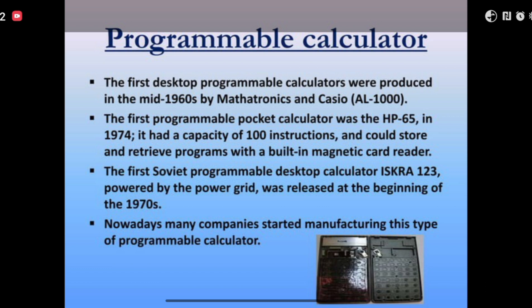The first programmable pocket calculator was the HP-65 in 1974. It had a capacity of 100 instructions and could store and retrieve programs with a built-in magnetic card reader. The first software-programmed desktop calculator, powered by the power grid, was released at the beginning of the 1970s. Nowadays, many companies started manufacturing this type of programmable calculator.